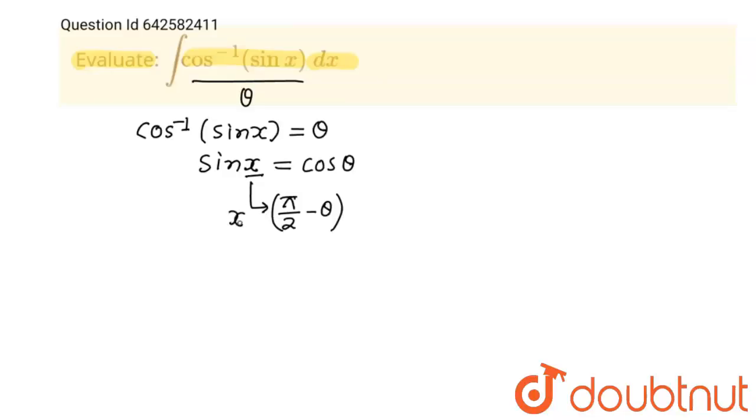And this x will be equal to 90 minus theta. It means that theta will be equal to 90 minus x, pi by 2 minus x.